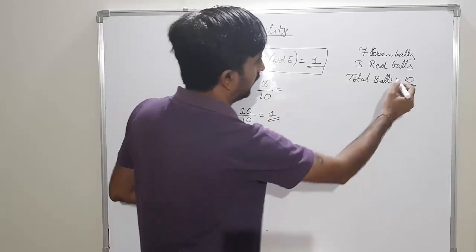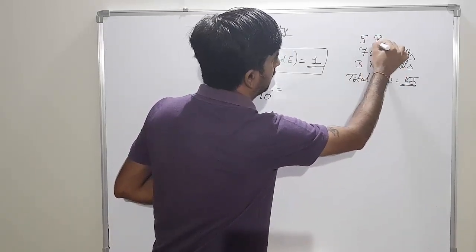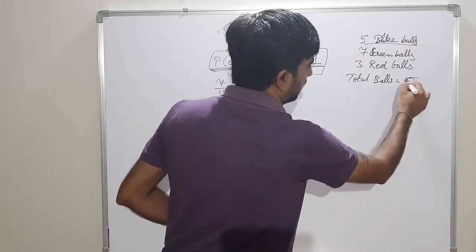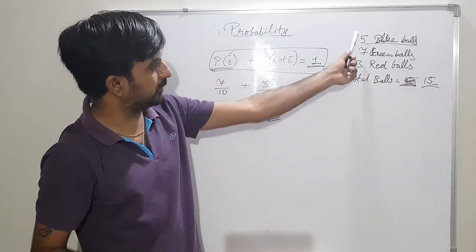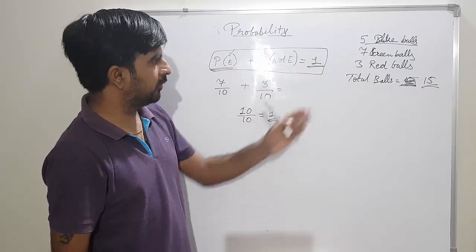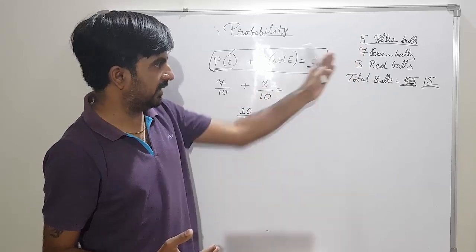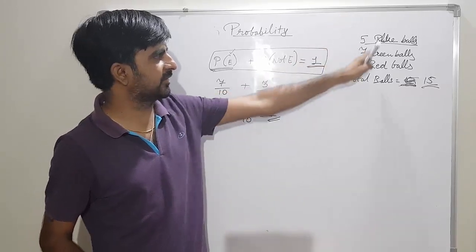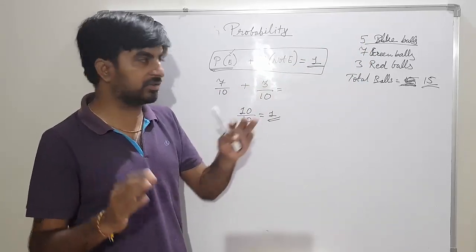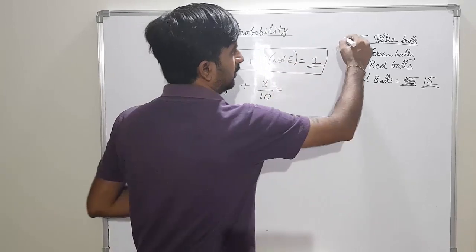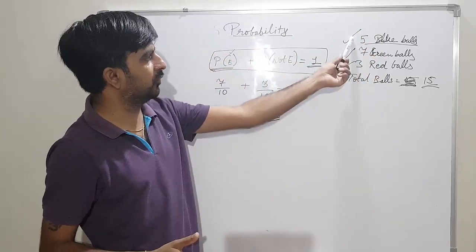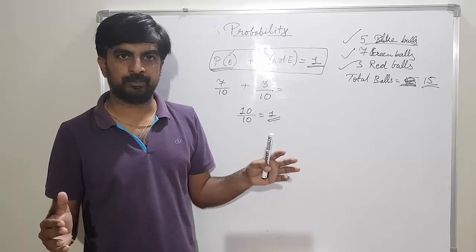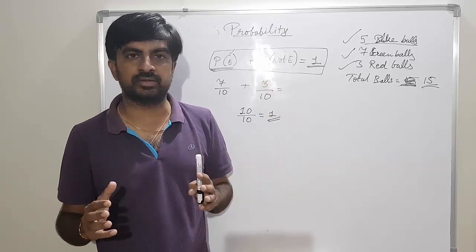Whenever you are having, suppose, 15 balls — if I add 5 blue balls, total balls become 15. If I tell you to find out the probability of all events one by one and then add all the probabilities, you will obviously get answer one. Because when you take all the different things inside the bag and add all their probabilities, the sum of all events equals one. So these are the basic things we need to study before starting probability. Thank you so much for watching — if you like it, please subscribe to my channel so I can bring more such videos.